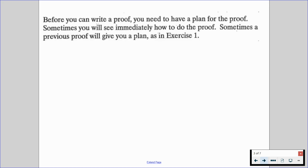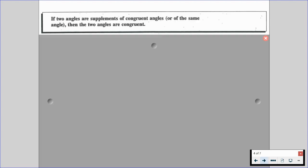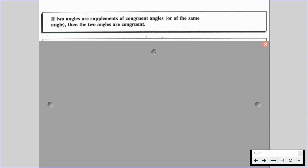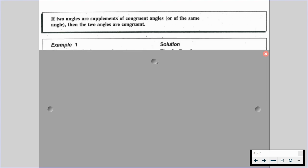Before you're able to write a proof, you're going to need to have a plan for the proof. Sometimes you're going to see immediately how to do the proof, and sometimes maybe a previous proof is going to give you a plan, as in the first exercise that we're going to be doing. We have this statement that if two angles are supplements of congruent angles or of the same angle, then the two angles are going to be congruent.